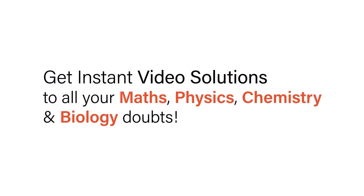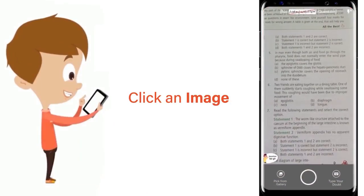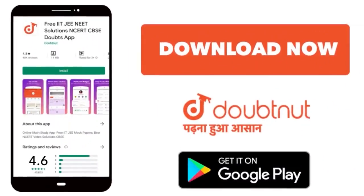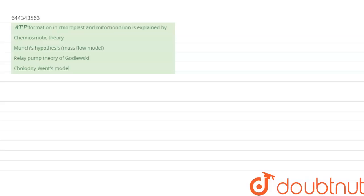With Doubtnet, get instant video solutions to all your math, physics, chemistry, and biology doubts. Just click the image of the question, crop the question, and get an instant video solution. Download Doubtnet app today. We have the question: ATP formation in chloroplast and mitochondria is explained by...